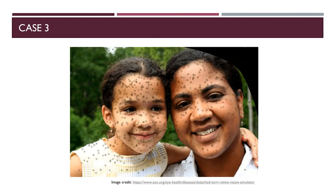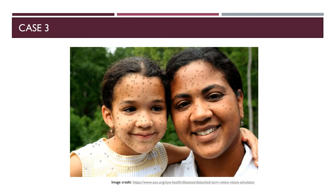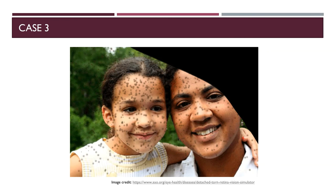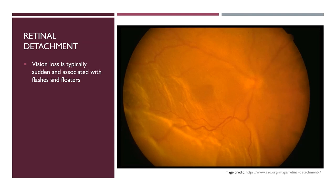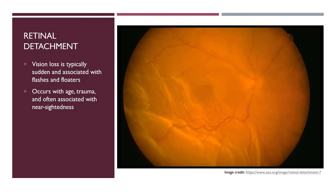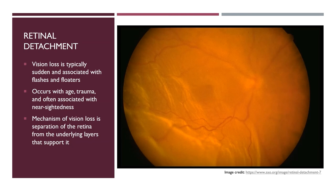Case three: a grandmother in the park notices a sudden flurry of floaters throughout her vision, followed by a curtain coming down across her view. Retinal detachment is another form of retinal vision loss, typically sudden and associated with flashes and floaters. Direct ophthalmoscopy may reveal a yellowing color of the retina, which may be billowing with movement. It occurs with age, trauma, and sometimes nearsightedness, where peripheral retinal holes allow fluid into the subretinal space, releasing the retina from the retinal pigment epithelium, choroid, and sclera. Vision loss occurs because separation detaches the retina from its blood supply and nourishment.